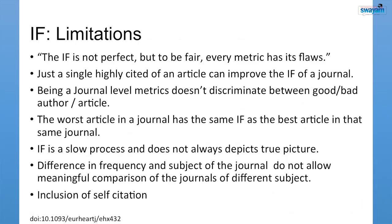Let us discuss limitations of impact factor. The impact factor is not perfect, but every metric has its flaws. Just a single highly cited article can improve a journal's impact factor. Being a journal-level metric, it does not discriminate between good and bad authors or good and bad articles — the worst article in a journal has the same impact factor as the best. Impact factor is a slow process and does not always depict the true picture. Differences in frequency and subject across journals do not allow meaningful comparison across subject areas. Lastly, inclusion of self-citation is a problematic factor.